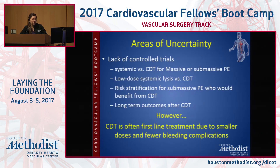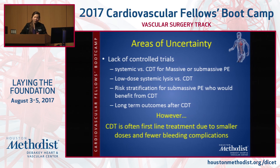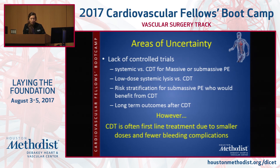Areas of uncertainty: lack of randomized controlled trials on whether systemic versus catheter-directed is better for both massive and submassive PE, whether low-dose systemic lysis is comparable to catheter-directed. Low-dose systemic would be 50 milligrams TPA over two hours, and studies suggest low-dose is as therapeutic with fewer bleeding complications. Questions remain about who are appropriate candidates and what the long-term outcomes are. Despite this, catheter-directed therapies have become more popular and at some hospitals are the first-line treatment, due to the smaller TPA dose and fewer bleeding complications.